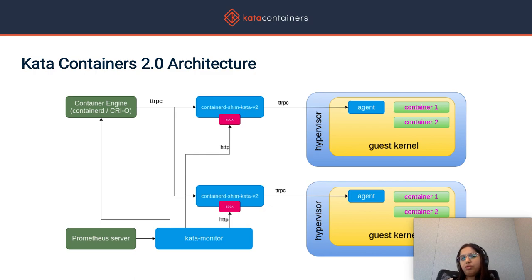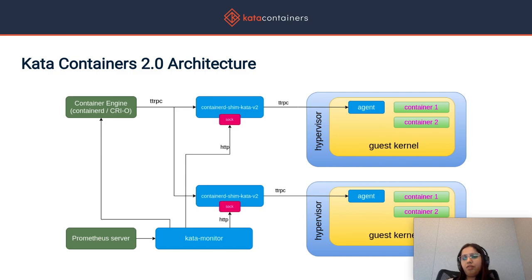With Shim V2, it was also possible to have a single process — called the containerd-shim-kata-v2 process — running for every pod, which reduced memory overhead as well as overall complexity. We later worked with the CRI-O community to have this implemented on the CRI-O side as well. With both CRI-O and containerd supporting this, we made it the default architecture in Kata 2.0.